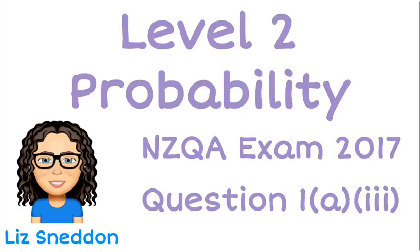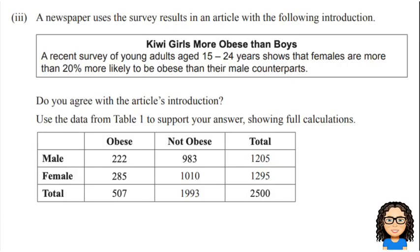Hi, I'm Liz Sneddon, having a look at the 2017 exam for probability level 2, question 1a part 3. We're given a survey introduction stating that females are more than 20% more likely to be obese than their male counterparts.